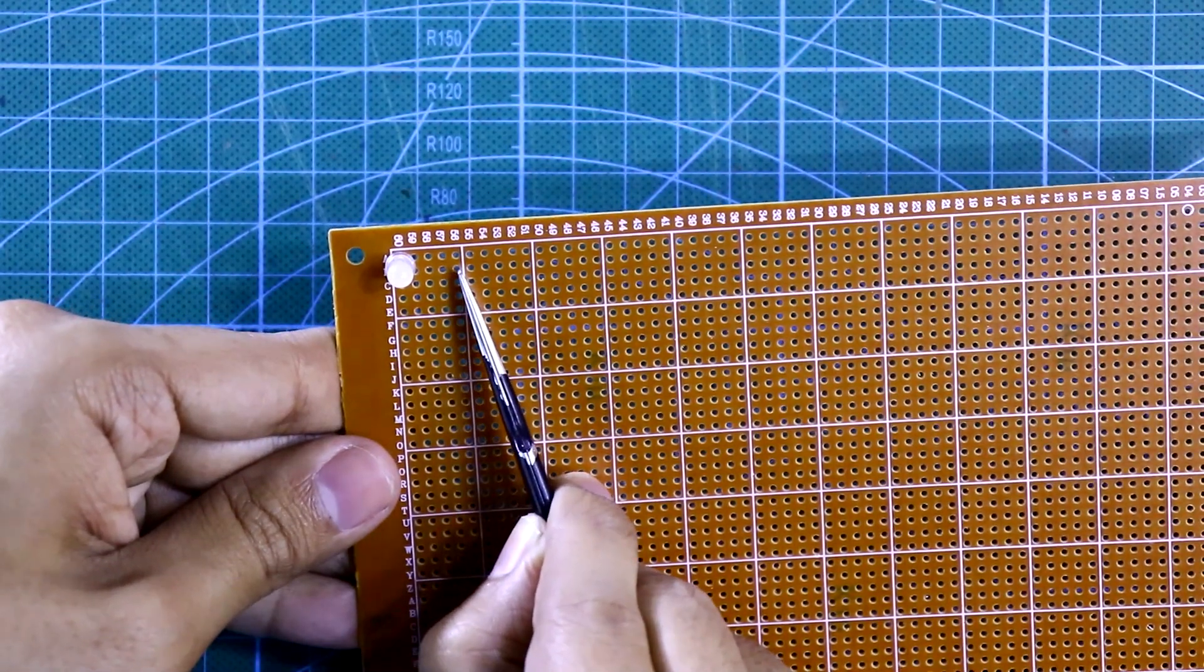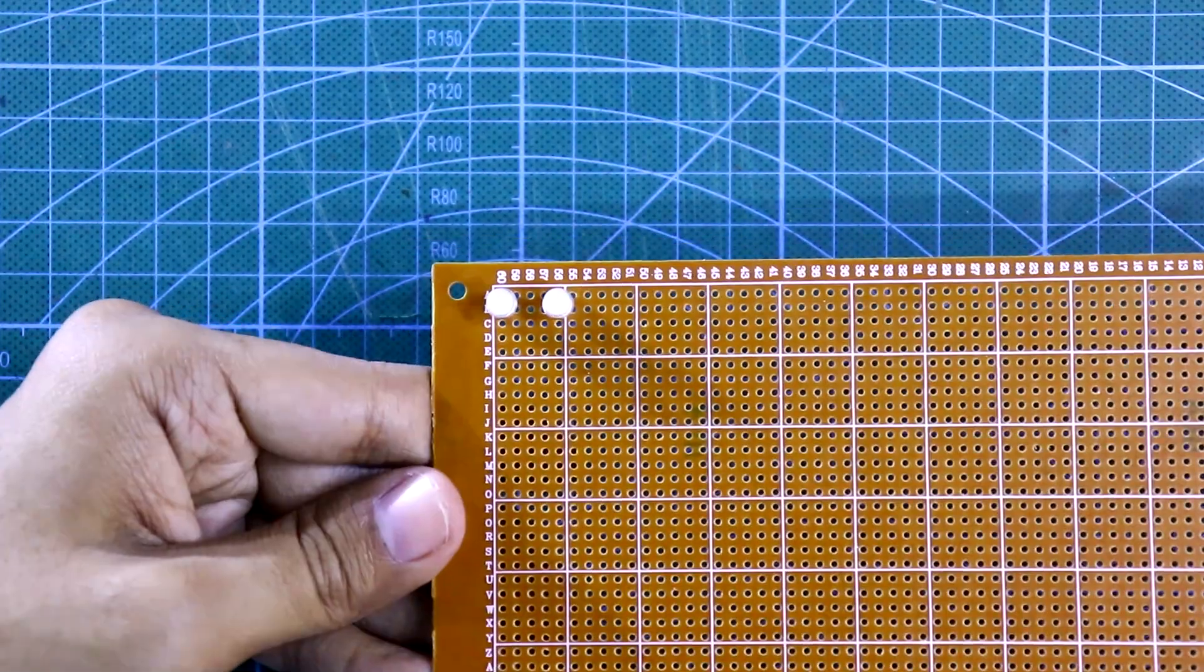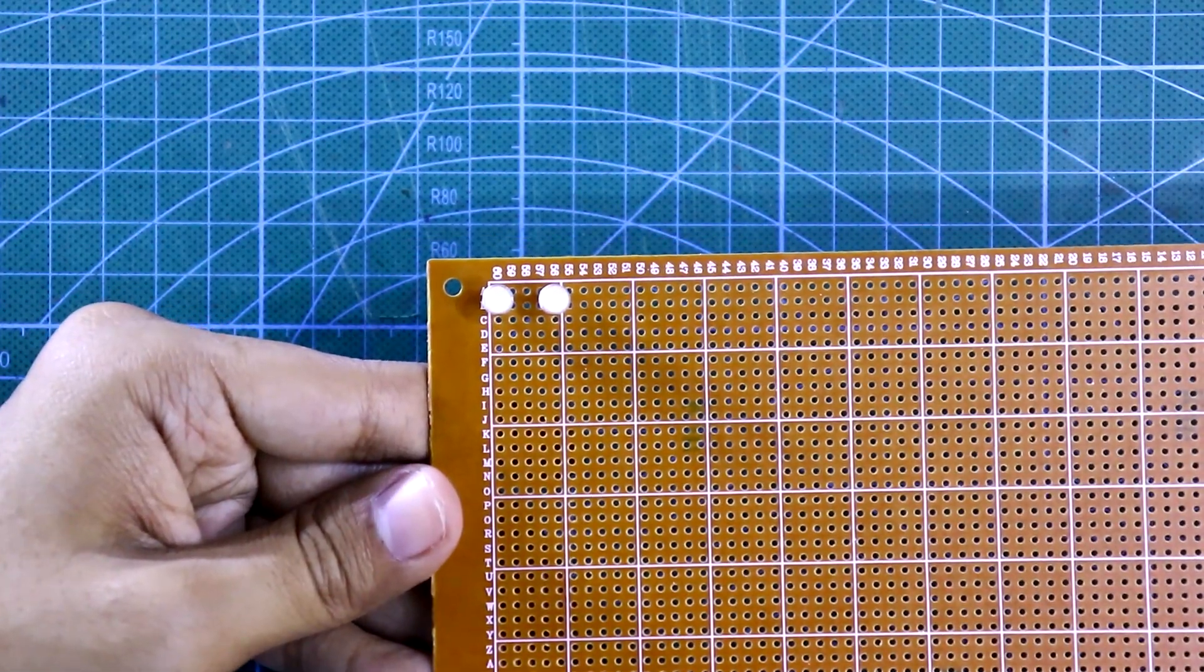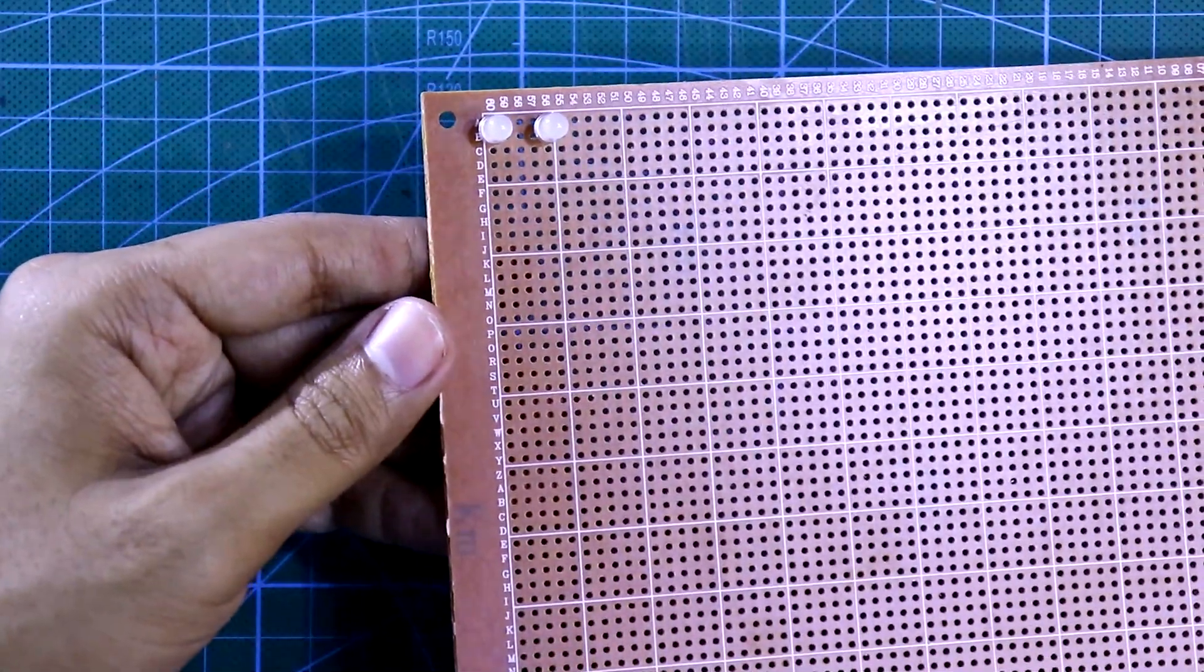After three gaps I'm putting another LED. Keeping the same distance I'll put 10 LEDs in this line and in this line also.